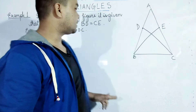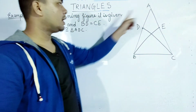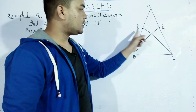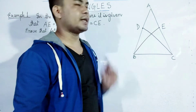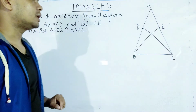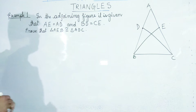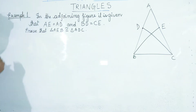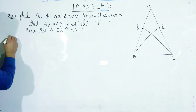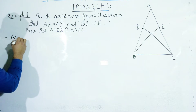Triangle AEB and triangle ADC are given. It is not true — it is not true. So in this example, the triangle is given. This is the same.